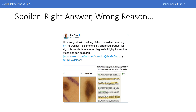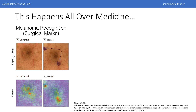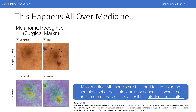What's the problem we're talking about? As you can see in this recent example, machine learning models often perform differently on different subsets of the data. In this case, a model trained to determine whether or not a given image of a skin lesion contains melanoma performed differently in cases where there were marks indicating that the individual was about to be taken into surgery to correct the issue. In fact, if we look more closely, our worst fears are confirmed. Not only does the model perform differently on cases where there are surgical markings, but the activation maps clearly show that the model is weighting these areas highly in its classification. Fundamentally, this happens because machine learning models are built and tested using an incomplete set of possible labels, or schema. When models perform substantially differently on unrecognized or unlabeled subsets, we call this hidden stratification.